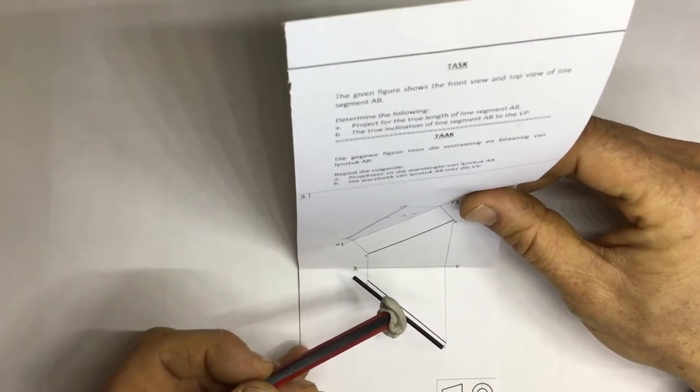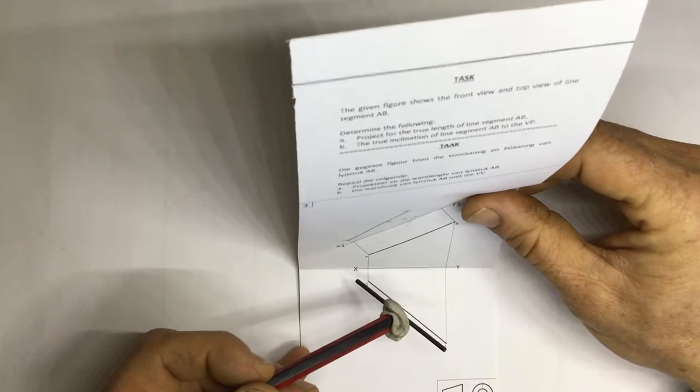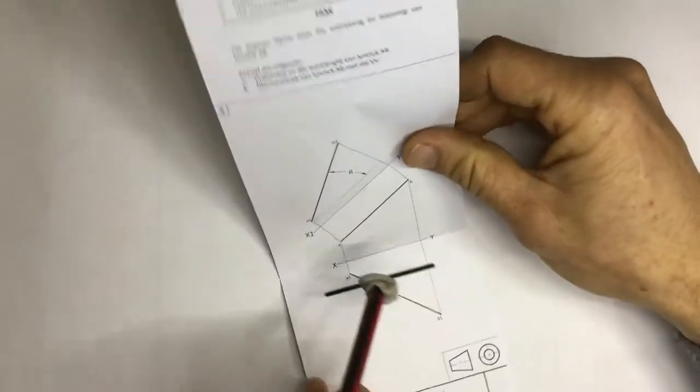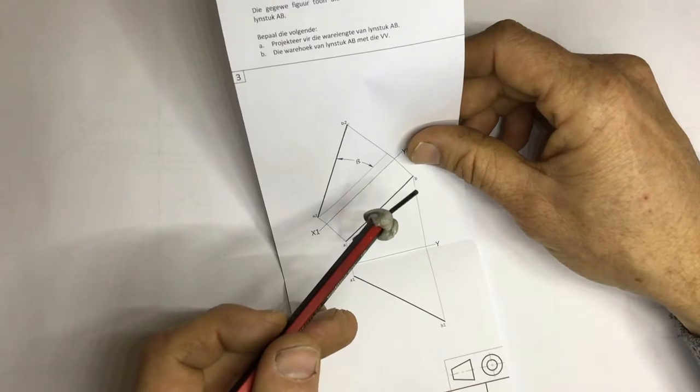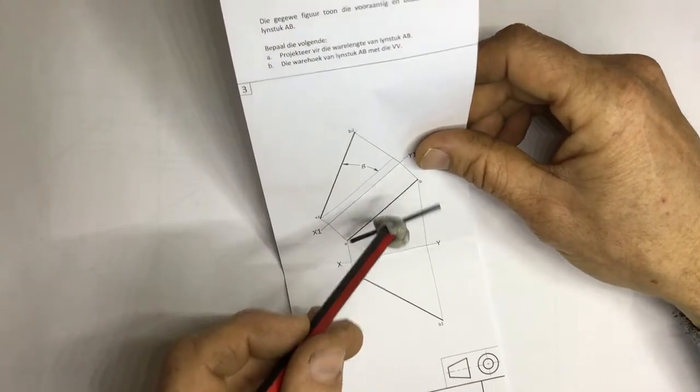You can see I'm tilting it until it's casting that shadow of the line segment just down below it. And the same thing is happening with my front view over here. I'm tilting it so that you can get the shadow cast onto the vertical plane as well.